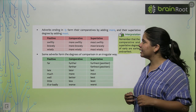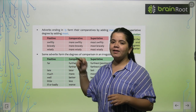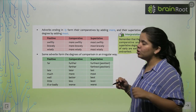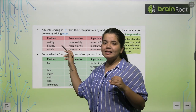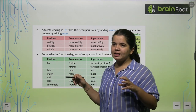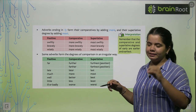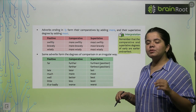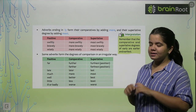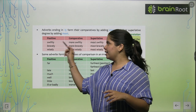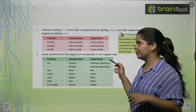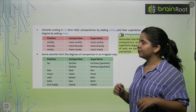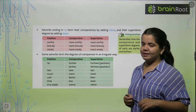Next, for adverbs ending in -ly, we use 'more' for comparative and 'most' for superlative. You don't say 'swiftlier' — that's completely wrong. You say: swiftly, more swiftly, most swiftly. Similarly: bravely, more bravely, most bravely; wisely, more wisely, most wisely.